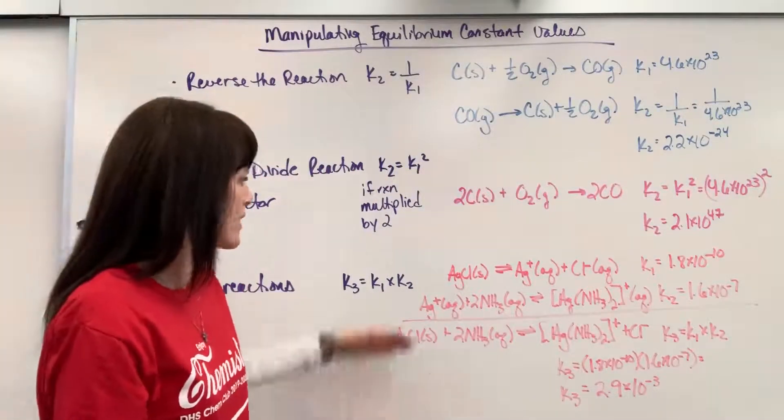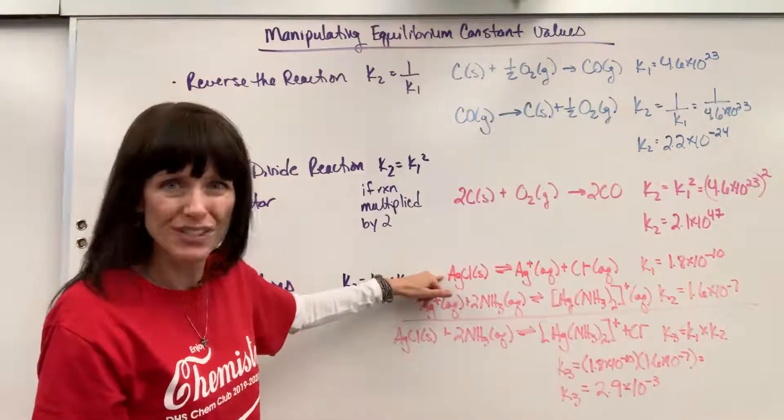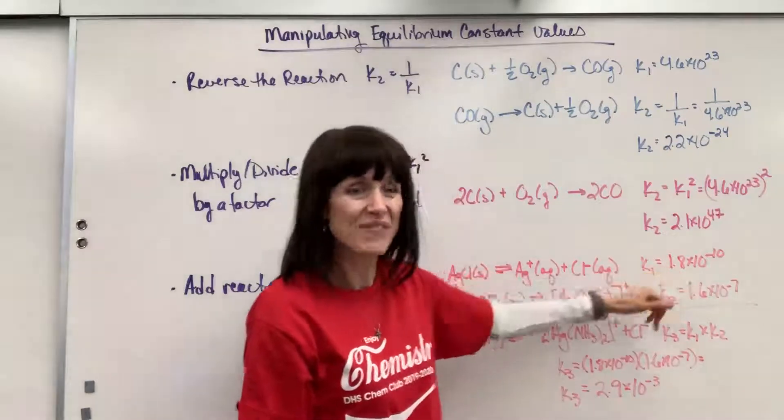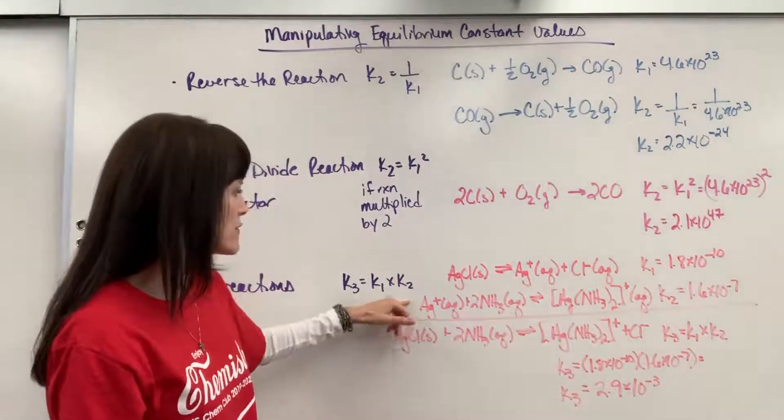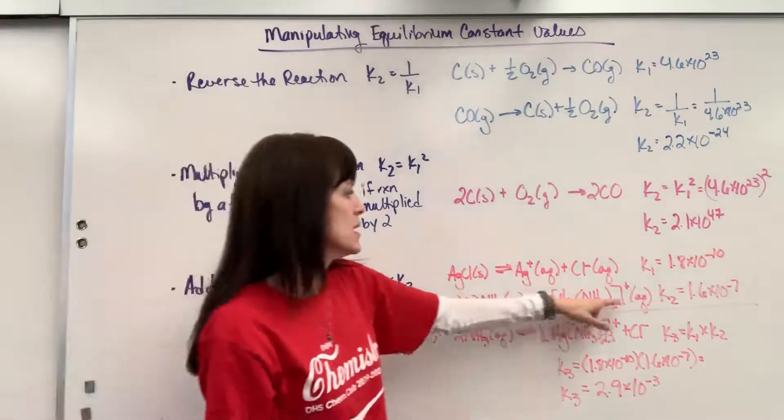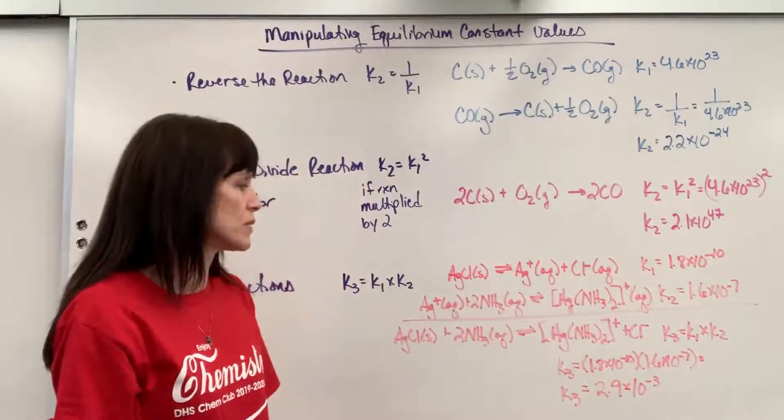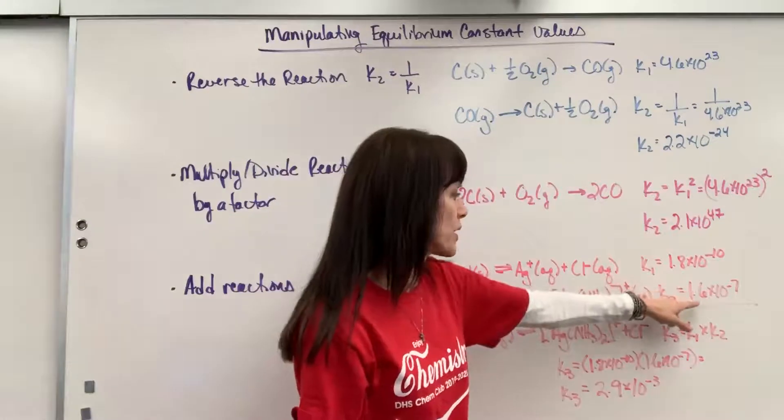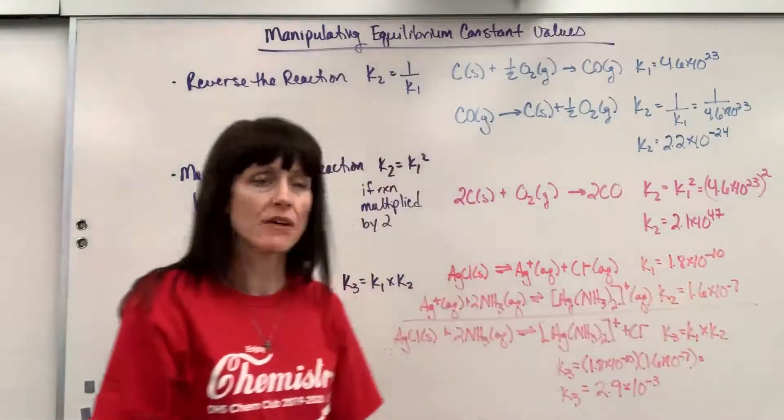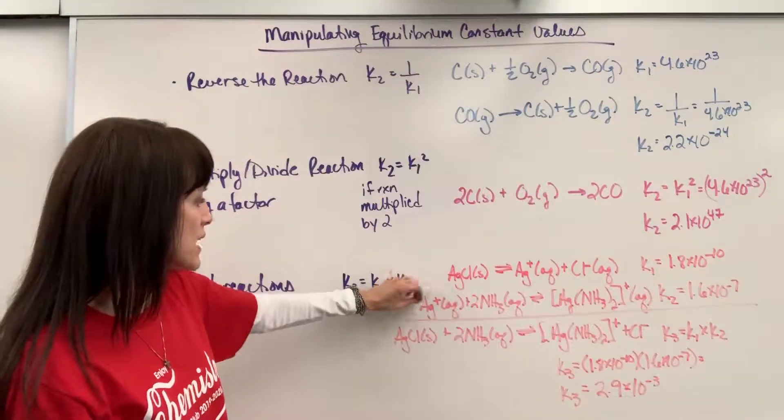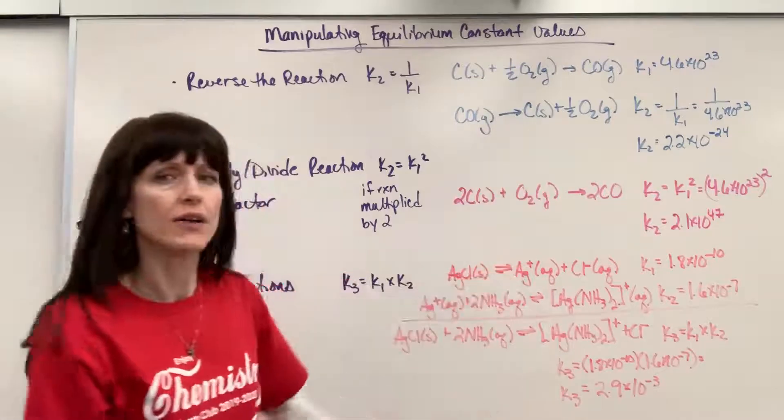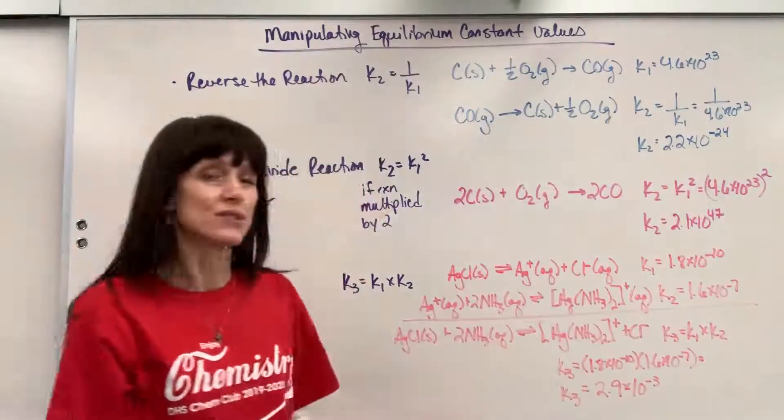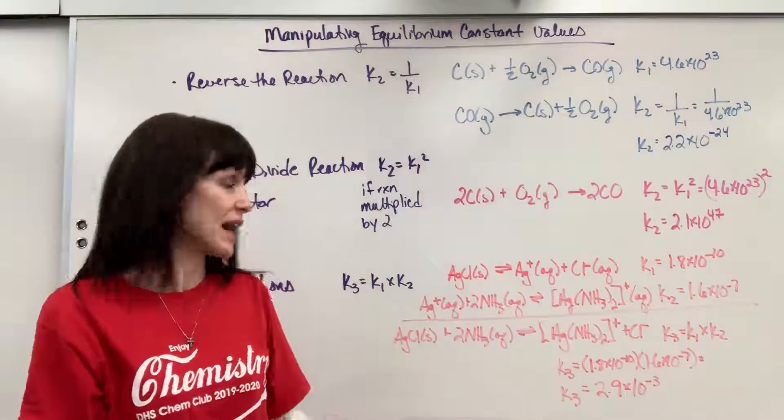So I have this example. It's going to be the dissolution of silver chloride. Its equilibrium is 1.8 times 10 to the minus 10. And then we have silver plus ammonia. It's going to give us this really cool coordination compound, and its expression is 1.6 times 10 to the minus 7. Now, when I add these reactants together, the silver ion will cancel since it's on the reactant product side. We end up with this overall reaction.